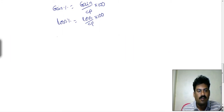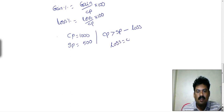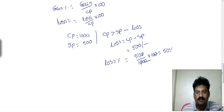Suppose an item is purchased for a cost price of 1000 and the selling price is 500. Since cost price is greater than selling price, there is a loss. The loss equals cost price minus selling price: 1000 minus 500 equals 500. The loss percentage is 500 divided by 1000 into 100, which equals 50% loss.